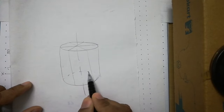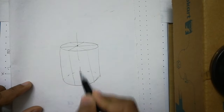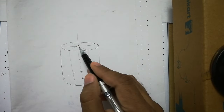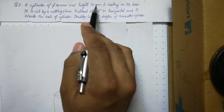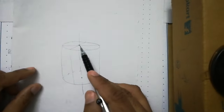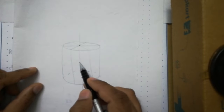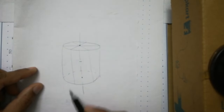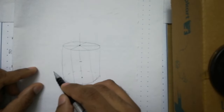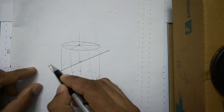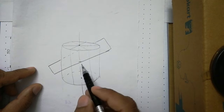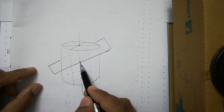The axis of the cylinder starts from the top face and ends at the bottom face. This axis height is given as 50mm. The cutting plane bisects the axis, so if the height is 50, bisection means half — that is at 25mm. From this point we have to cut the cylinder with the cutting plane, which cuts so that it bisects the axis.